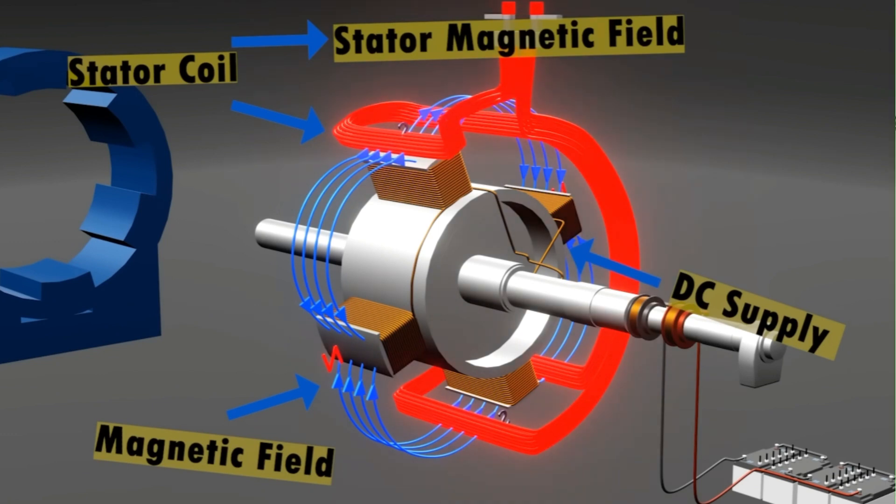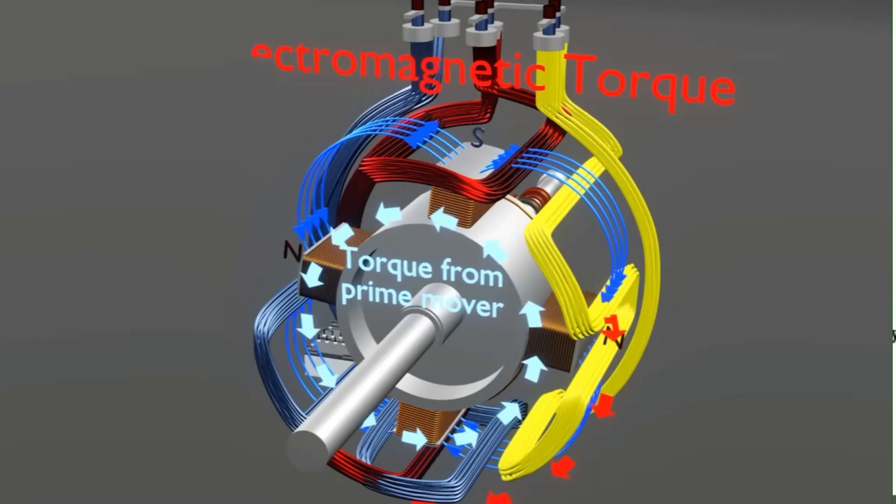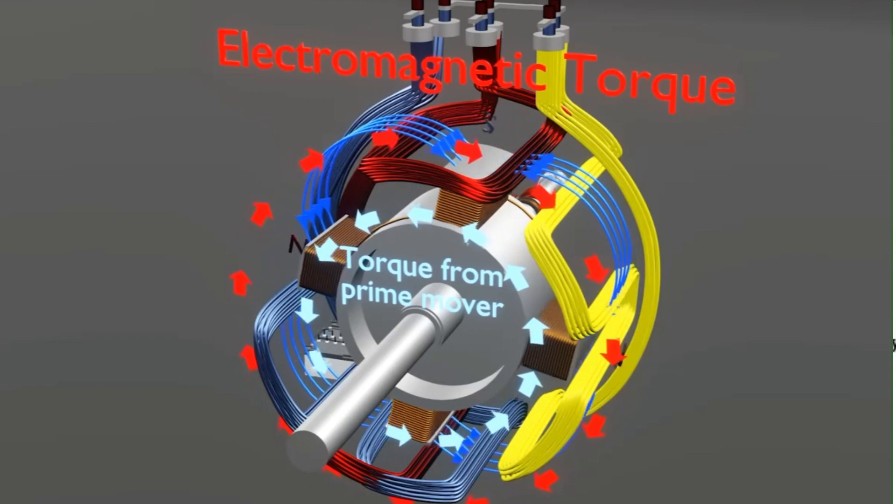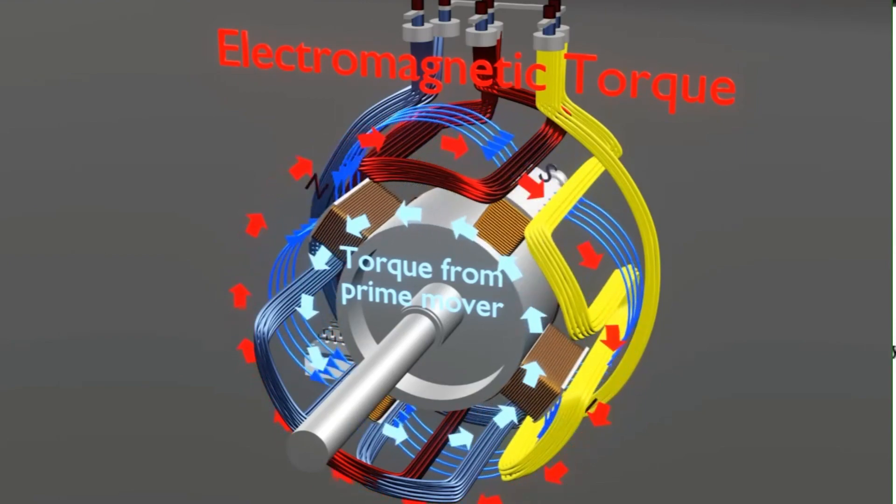This DC current is supplied by a smaller generator, often called an exciter. The rotor spins at a constant speed, or synchronously, with the frequency of the alternating current it produces. Hence the name synchronous generator.